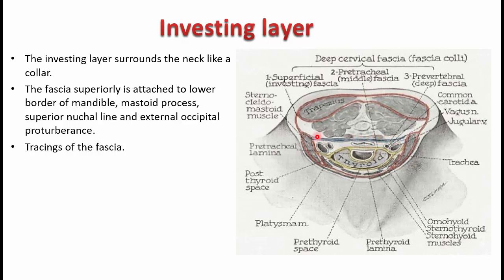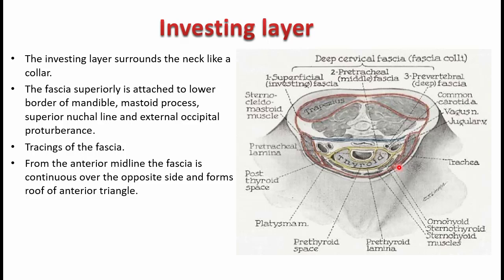More posteriorly, you can see the prevertebral fascia. If you trace from the anterior midline, the investing layer is continuous with the opposite side. Moving more laterally, it splits to enclose the sternocleidomastoid muscle, then unites again, forming the roof of the posterior triangle. The roof of the posterior triangle is formed by the investing layer of deep cervical fascia. It then splits again to enclose the trapezius muscle — these two being the anterior and posterior boundaries of the posterior triangle — and finally attaches to the ligamentum nuchae and the cervical spine.